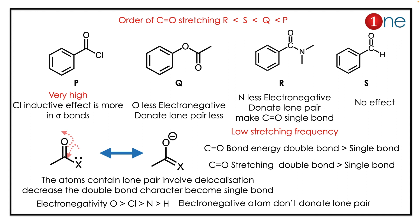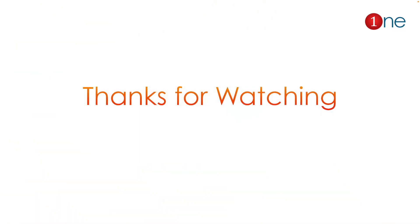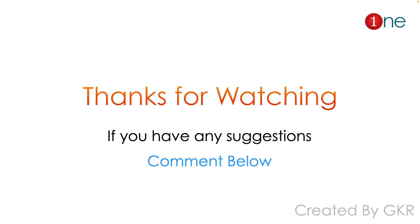So the final order is R, S, Q, P — where P (acid chloride) is highest and R (amide) is the least. The key concept here is: to have a higher C=O stretching frequency, the carbonyl should not become a single bond. That's all from this video — thanks for watching.